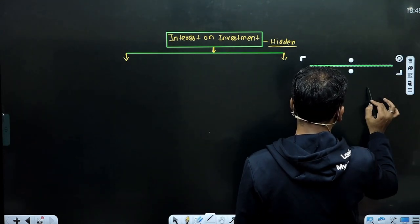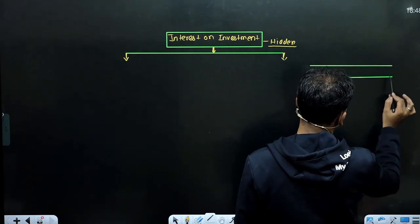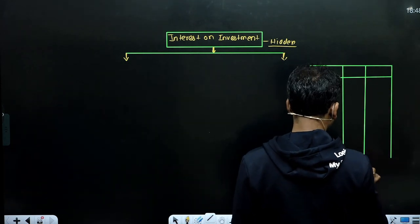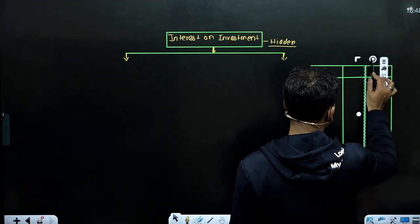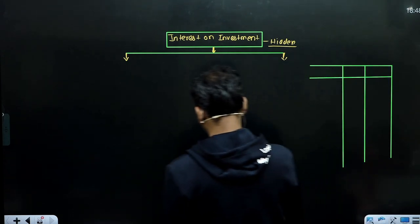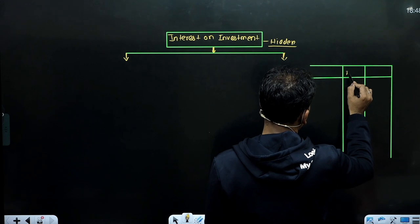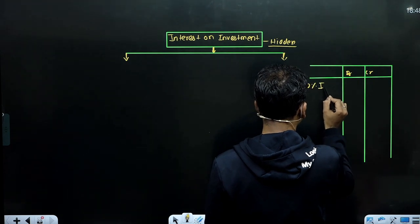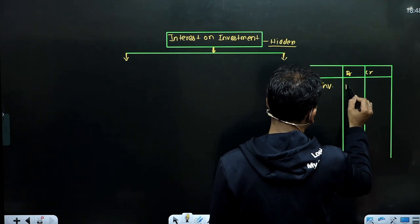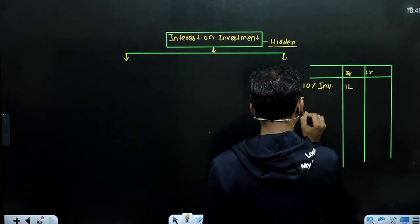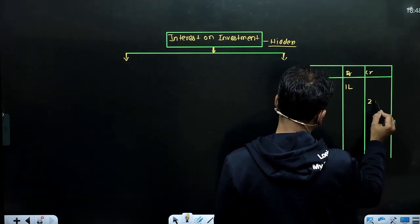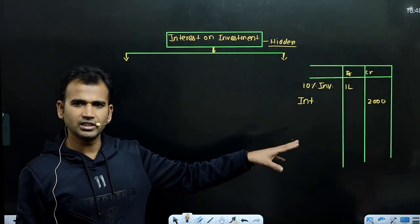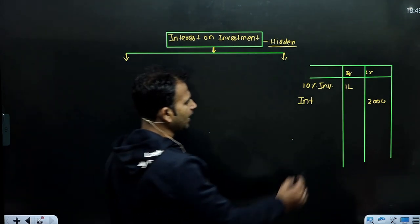ये आपके सामने एक Trial Balance बना देता हूँ। ये होगा हमारा Debit और ये Credit। मैंने लिखा Investment — 10% Investment लिख दिया। Investment Assets होता है, that's why ये Assets साइड में दिखेगा ₹1,00,000। Interest लिखा ₹2,000 — Interest ₹2,000 Credit में Trial Balance में लिखने का मतलब है ₹2,000 मिला है।